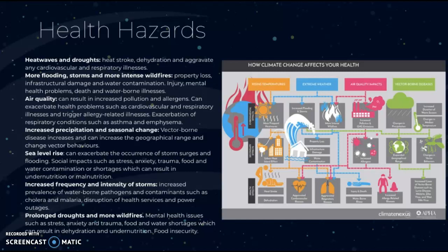Increased precipitation and seasonal change from climate change can lead to vector-borne diseases increasing, and can also increase the geographical range and change vector behaviors, making them more dangerous for susceptible groups who may not have encountered them before. Rising sea levels can exacerbate storm surges and flooding, causing social impacts such as stress, anxiety, trauma, food and water contamination or shortages, which can result in undernutrition or malnutrition.